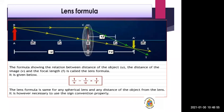The lens formula is the same for all spherical lenses and for any distance of the object from the lens. However, it is necessary to use the sign convention properly. In some cases V is negative — meaning the image is on the same side as the object — and in some cases V is positive, meaning the image is on the other side.